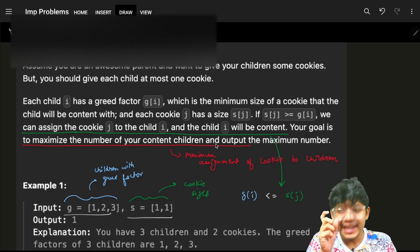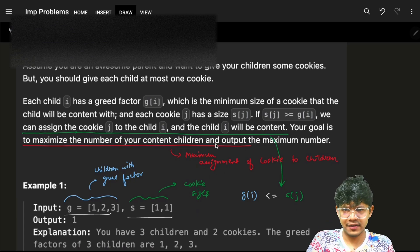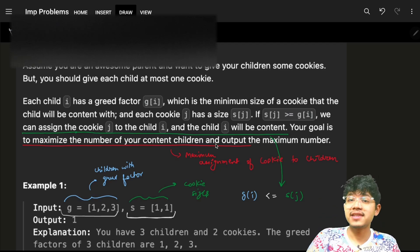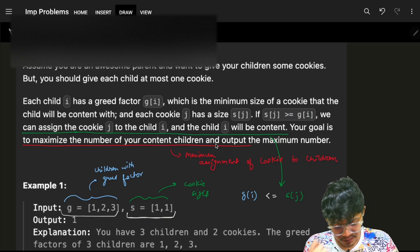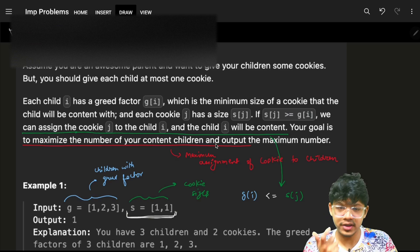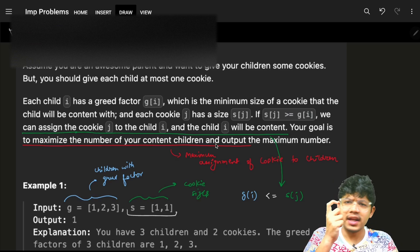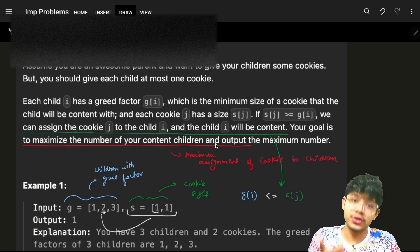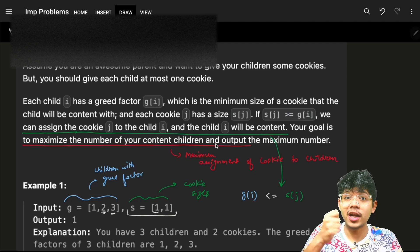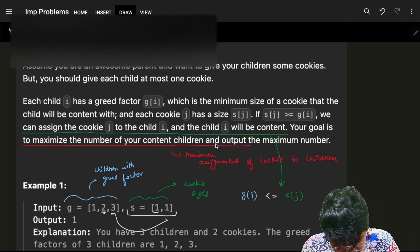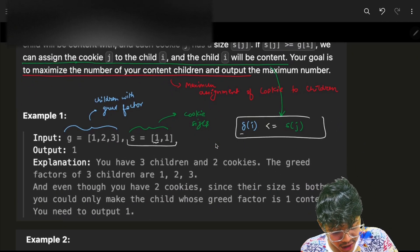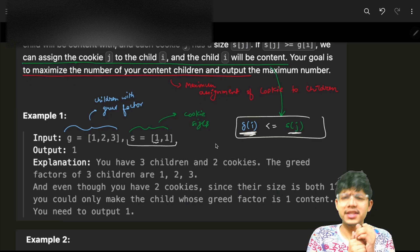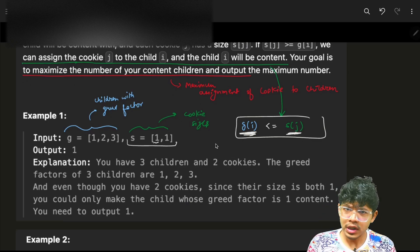Array g is the greed factor of the children. You have n children, and for every child you have a greed factor. The greed factor means that a child can accept a cookie which is at least of his greed factor size. So if a child has a greed factor of two, he will accept at least a cookie of size two; a child with greed factor three will accept a cookie of size at least three.